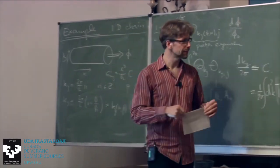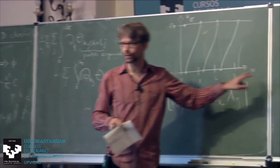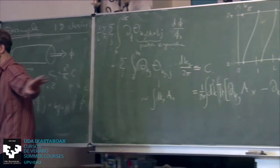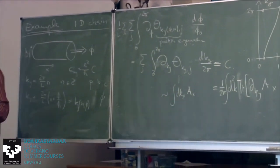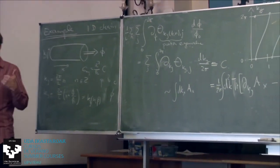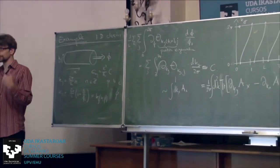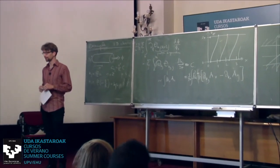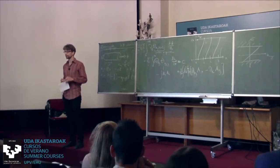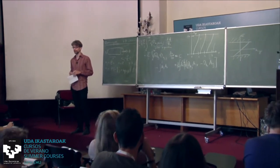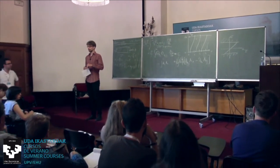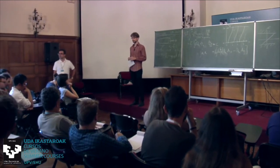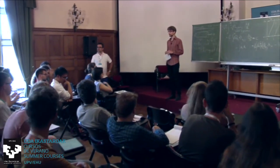Next time we'll start by making more rigorous the connection between the Wilson loop spectrum and the actual edge spectrum — showing that the Wilson loop spectrum corresponds one-to-one to the boundary spectrum of a topological system. Questions for that part so far?